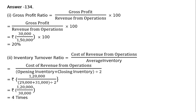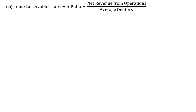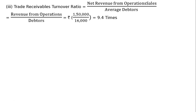Third part is Trade Receivables Turnover Ratio, that is Net Revenue from Operations by Average Debtors. That is equal to Revenue from Operations upon Debtors. That is equal to Rs. 1,50,000 — here it will not be averaged since only one figure is given, it is Closing Debtors, we can assume — upon Rs. 16,000. That is equal to 9.4 times.